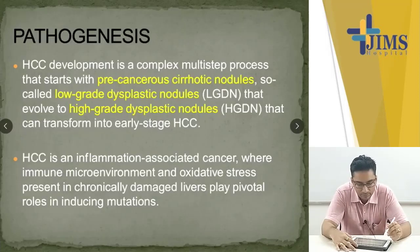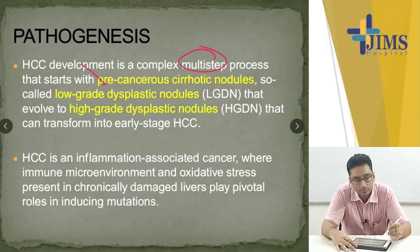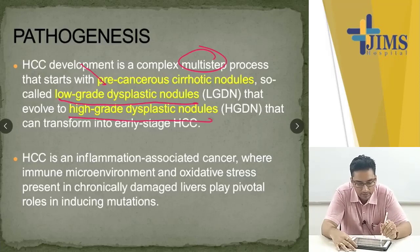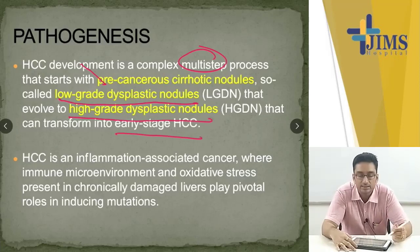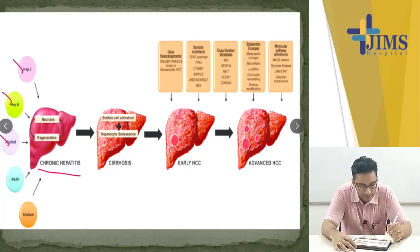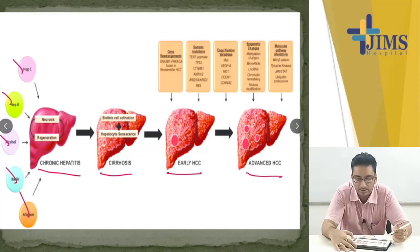The pathogenesis is a multi-step process. It starts with precancerous cirrhotic nodules — so-called low-grade dysplastic nodules — which evolve to high-grade dysplastic nodules that can transform into early-stage HCC. Chronic hepatitis caused by various reasons changes into cirrhosis, which changes into early HCC, then advanced HCC.